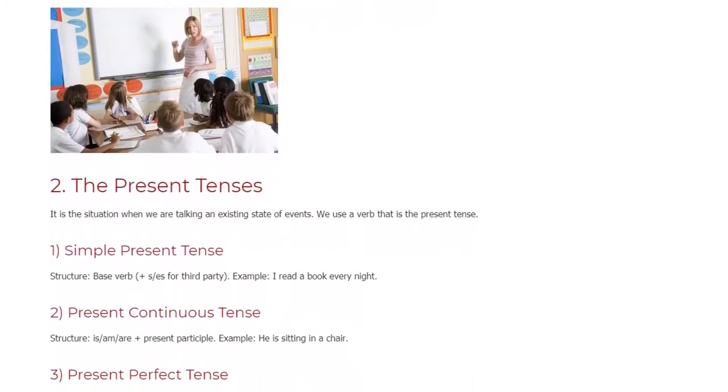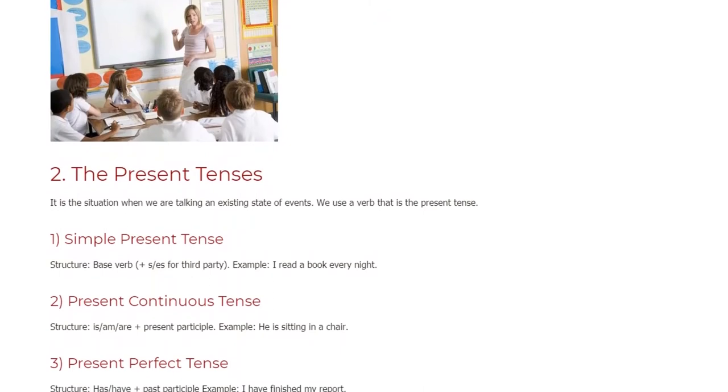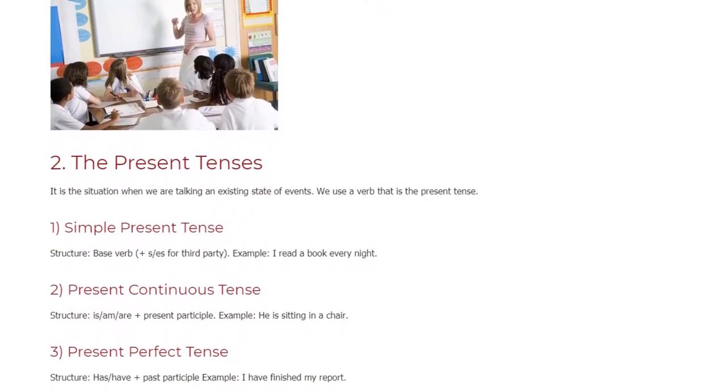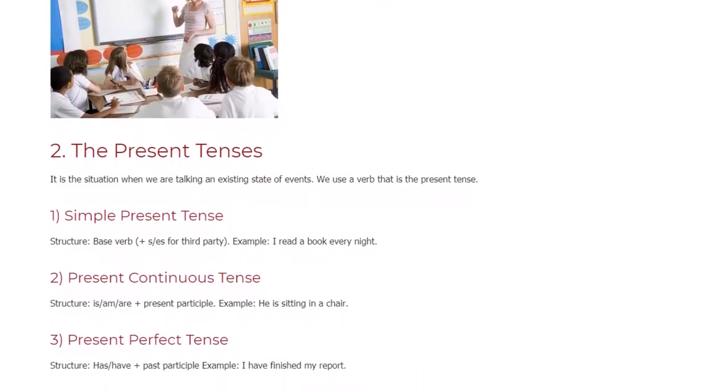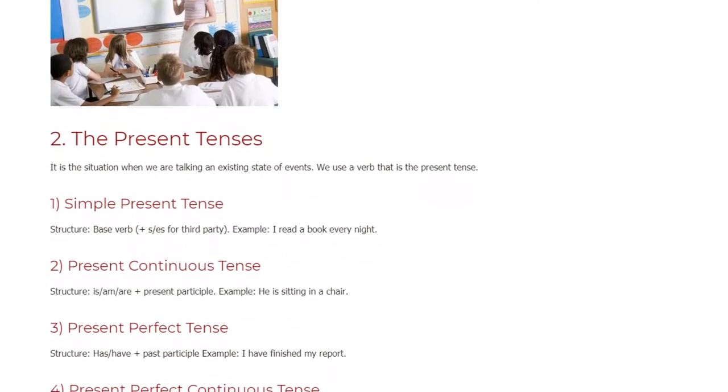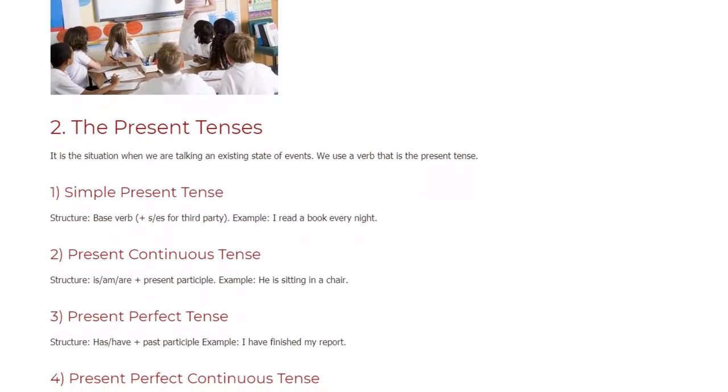4. Present Perfect Continuous Tense. Structure: Has/Have plus Been plus Present Participle. Example: I have been studying at this school since 2013.